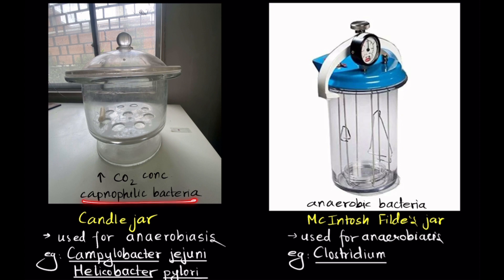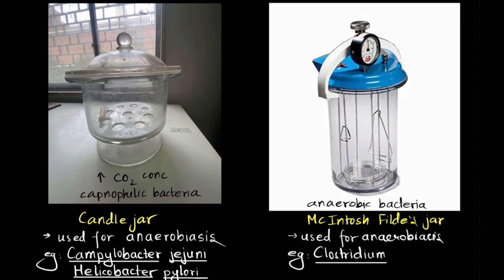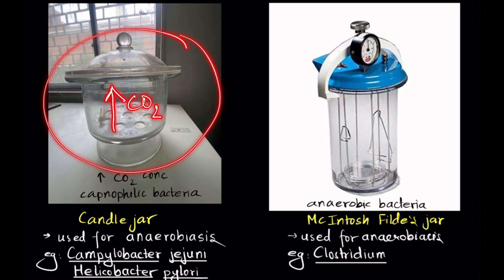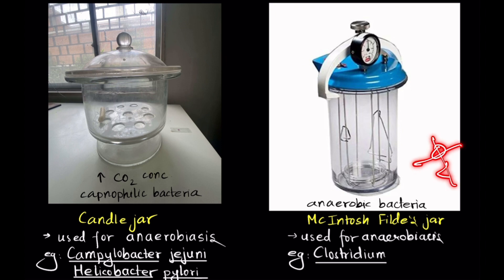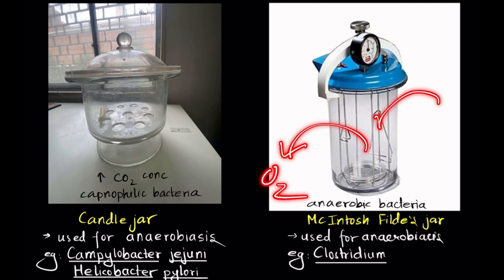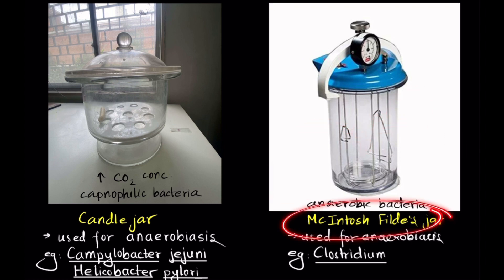The difference between capnophilic bacteria and anaerobic bacteria is that capnophilic bacteria does not just require the absence of oxygen — it also requires a certain level of carbon dioxide. Inside a candle jar, a higher concentration of carbon dioxide is maintained so that capnophilic bacteria like Campylobacter jejuni and Helicobacter pylori can be grown. Anaerobic bacteria, on the other hand, simply grow in the absence of oxygen, and oxygen is removed while gases like hydrogen are added in the McIntosh filter jar to grow anaerobic bacteria like Clostridium.